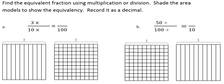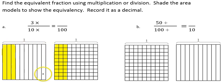In my first problem, I have 3 tenths, and I need to show how 3 tenths is equivalent to a certain amount of hundredths. I'm going to start by shading in my 3 tenths, and I'm going to shade in the equal portion on the hundredths model as well. I started by shading in 3 of the pieces out of the 10 that make up my 1 whole — that shows me 3 tenths. I shaded in the exact same amount on the next area model, and that will show you that 3 tenths is the same thing as 30 hundredths.